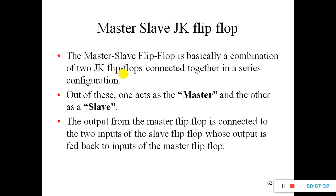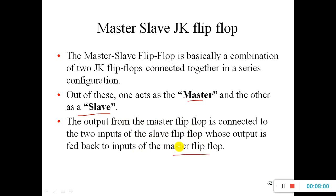The master-slave flip-flop is basically a combination of two JK flip-flops connected in series. One acts as the master and the other as the slave. The output from the master flip-flop is connected to the inputs of the slave flip-flop, whose output is fed back to the input of the master flip-flop.